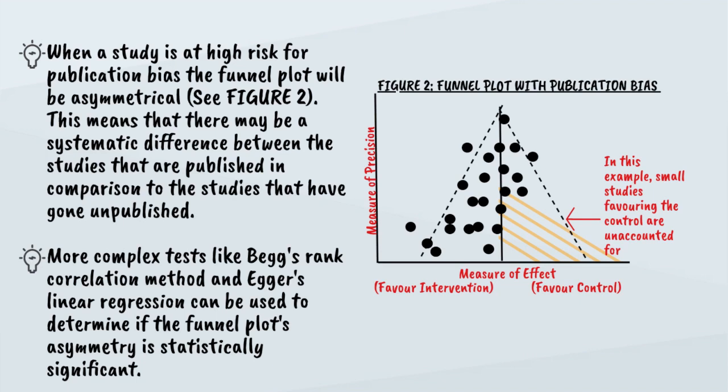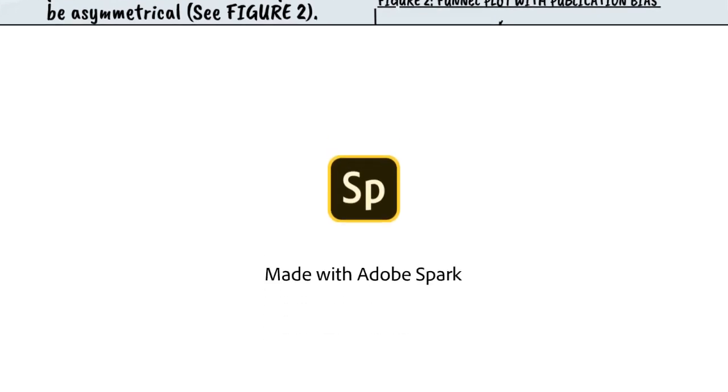Complex tests, such as Begg's rank correlation test and Egger's linear regression, should be used to determine if the funnel plot's asymmetry is statistically significant. Our ability to make informed decisions relies on our access to the best available scientific research. Because of this, it is important that we publish the findings of all research studies and trials, regardless of the significance of the results. That's all for now, thanks for listening.